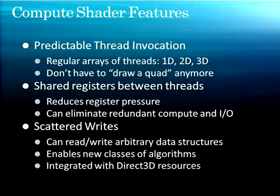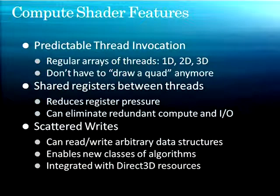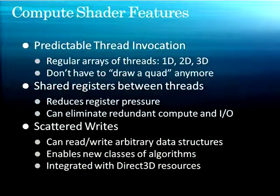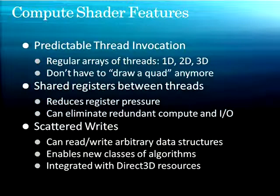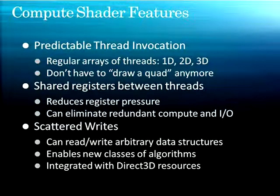Some of the features the compute shader has — there's much more documentation on this — are 1D, 2D, and 3D thread invocation and arrays. You're no longer forced to draw a quad to get the actual thing you wanted. Shared registers are super important. For example, you might calculate the average intensity over an image, and then for each pixel, move it closer to or farther from that average intensity. The average intensity isn't changing over the image, so we want to store it in one register that all threads can access. This obviously reduces or can eliminate redundant computations.